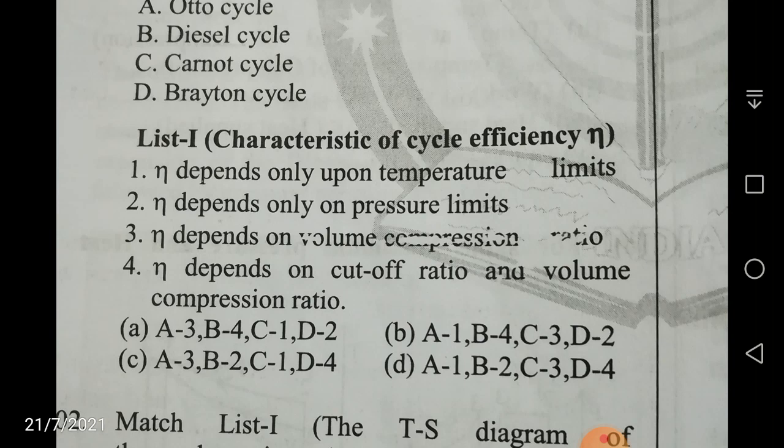Efficiency depends only on temperature limits — minimum and maximum temperature. Efficiency depends only on pressure limits — minimum pressure is normally atmospheric pressure and maximum temperature depends upon the amount of compression and also the amount of heat added. Next, efficiency depends upon the volume compression ratio. There are two types of compression ratios: volume compression ratio and pressure compression ratio. Volume compression ratio is the volume before compression to the volume after compression.